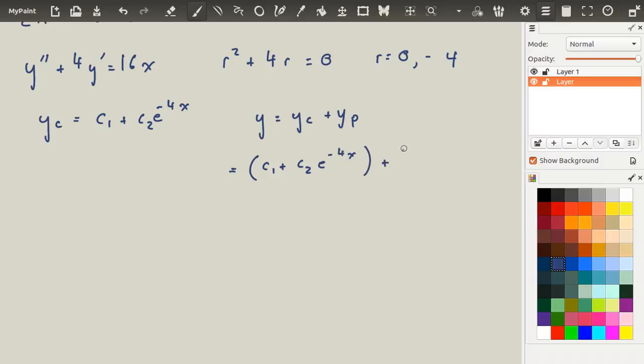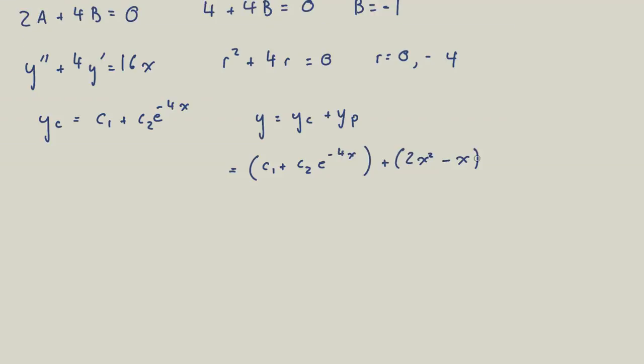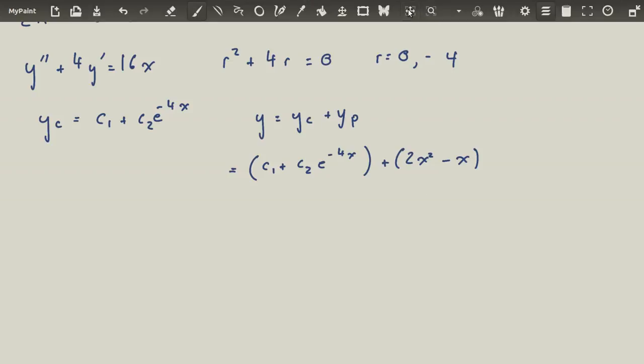Plus our yp, which is 2x squared minus x. So that's how you find the solution of a second order non-homogeneous equation by undetermined coefficients.